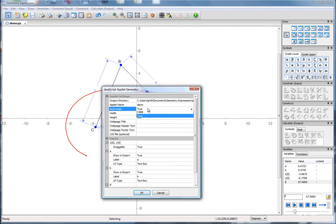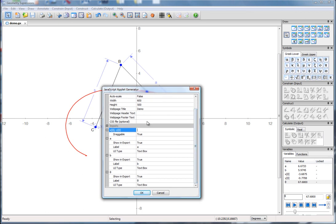And then, in this case, we'll turn off Autoscale. We'll make it a little bit bigger so that there's more interactive viewing area. We'll put in the title, and then we'll look down at our inputs. So we do want that point to be draggable. We do want to show A, B, and theta in the export. We'll leave those as text boxes, but let's change theta to be a slider which will allow us to have a little bit greater control over that variable, as well as automatically animate it.